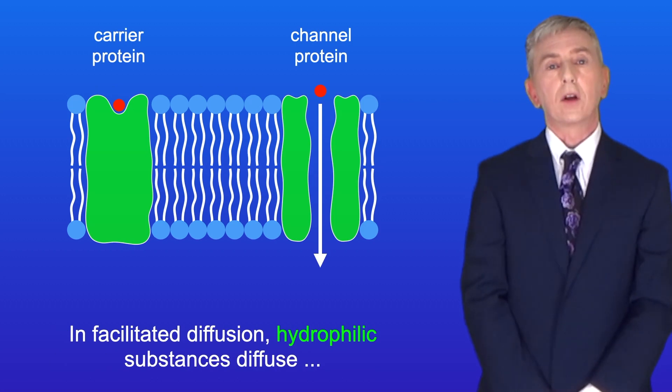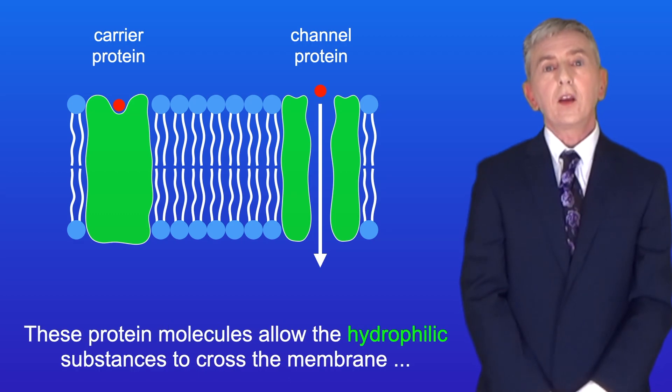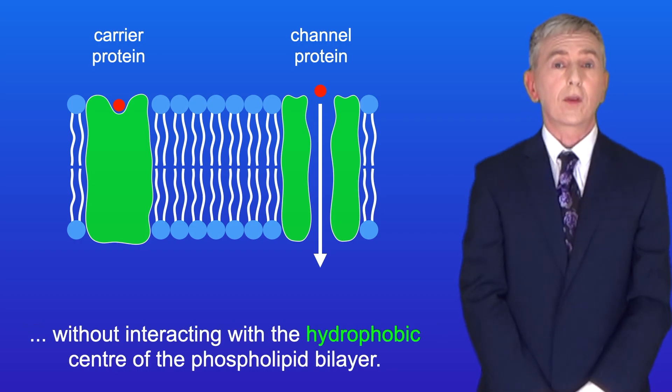In facilitated diffusion, hydrophilic substances diffuse across the cell membrane via protein molecules. These protein molecules allow the hydrophilic substances to cross the membrane without interacting with the hydrophobic centre of the phospholipid bilayer.